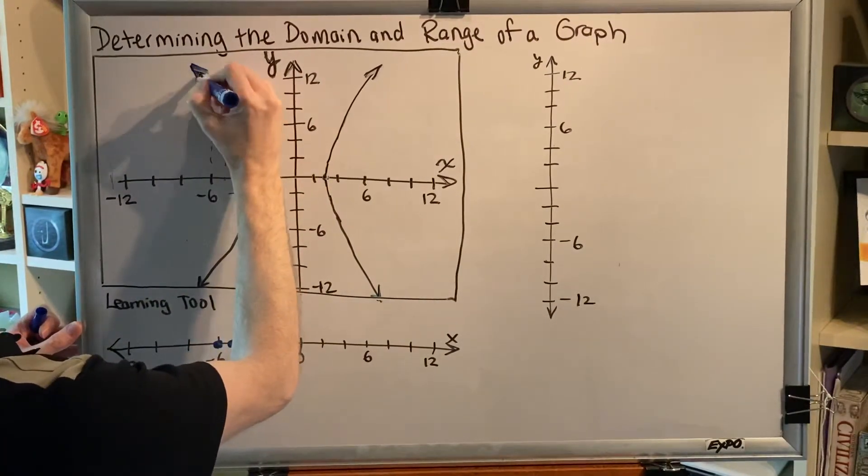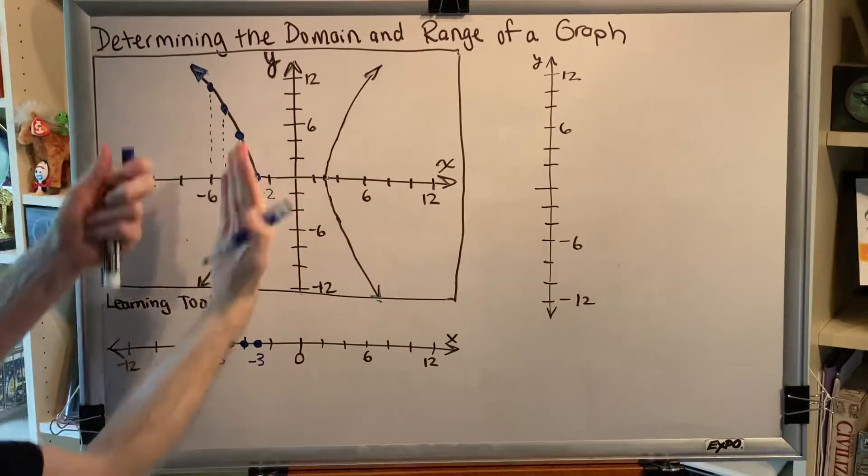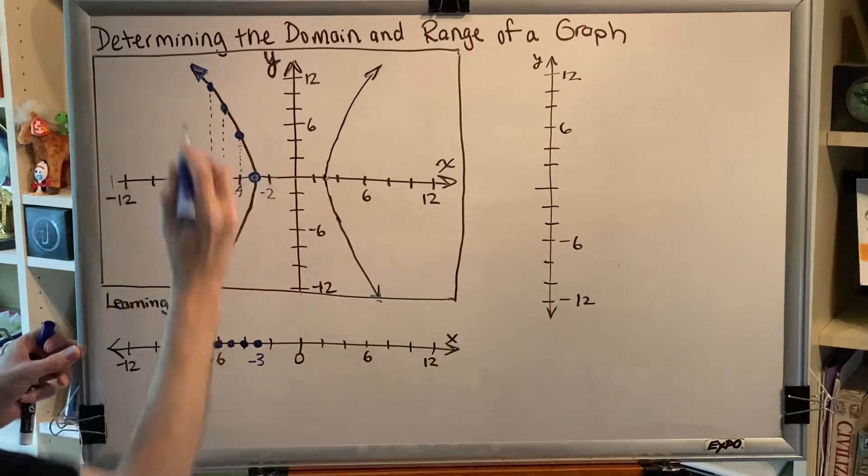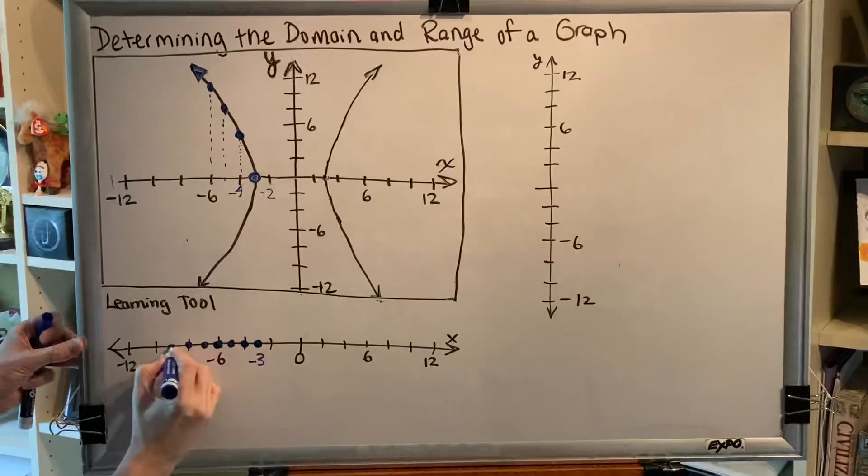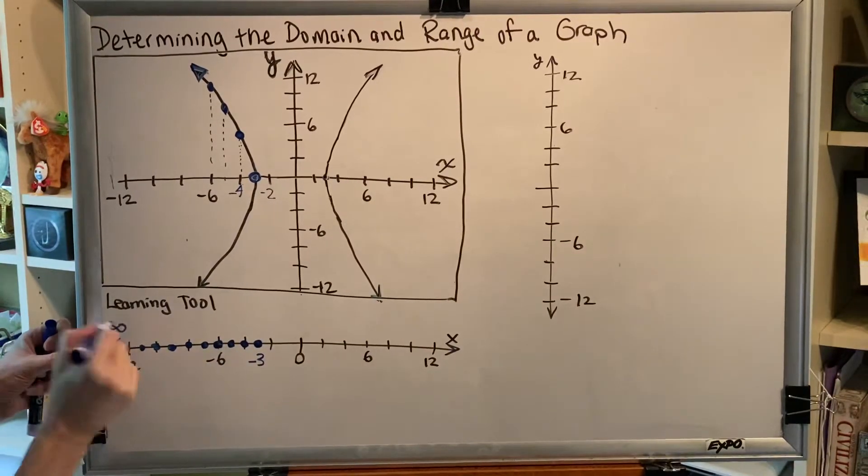What does that arrow mean? Well, that arrow means that this graph continues forever to the left. So you're going to have a negative 3 and a negative 4 and a negative 5 and a negative 6 and a negative 7 and a negative 8 and a negative 9 and a negative 10 and so on and so on and so on towards infinity.